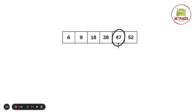In the worst case scenario, the element will be at the last position, so you have to go from the first element to the last element — that is an n-sized array, so O(n). Or suppose the element you are searching for is not present in the array: you will search the entire array and then declare element not present. In that worst case also, the time complexity is O(n). So to reduce this complexity we have binary search.